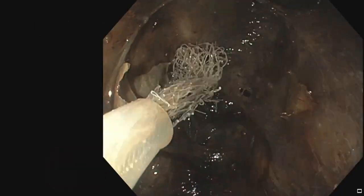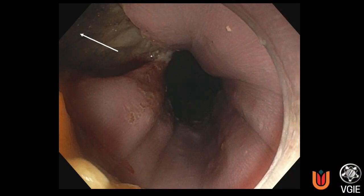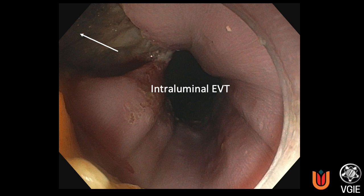After cleaning of the cavity, an attempt was made to place an esosponge into the cavity. However, due to the sharp angle upwards, this was not possible. Therefore, an esosponge was placed in the esophageal lumen, covering the defect.